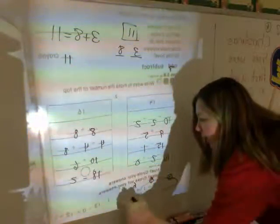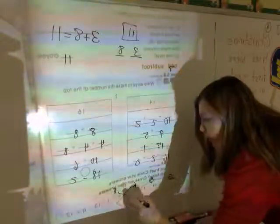4 plus 2 is 6. 9 minus 1 is 8. Those are not equal, so I'm going to cross it off.